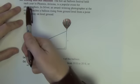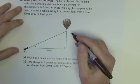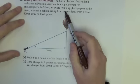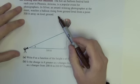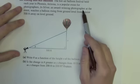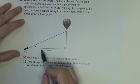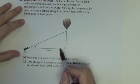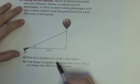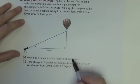Okay, word problem here. Rising hot air balloon. The hot air balloon festival held each year in Phoenix, Arizona is a popular event for photographers. Joe Silver, an award winning photographer at the event, watches a balloon rising from the ground level from a point 500 feet away on level ground. Write theta as a function of the height S of the balloon.